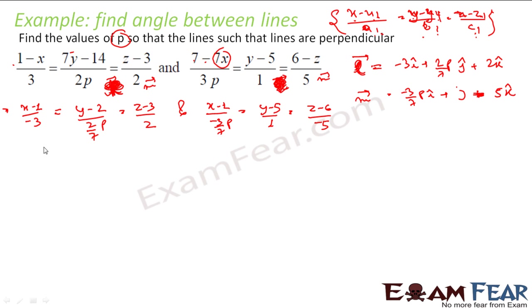Now since these lines are perpendicular, l dot m has to be 0. Or I can say that minus 3i plus 2 by 7p j cap plus 2k cap dot minus 3 by 7p i cap plus j cap minus 5k cap has to be equal to 0. This becomes minus 3 into minus 3 by 7p, that is 9 by 7p. 2 by 7p into 1 is 2 by 7p plus 2 into minus 5 is minus 10 equal to 0.